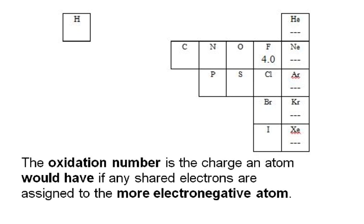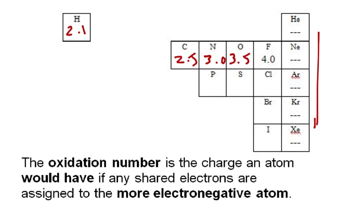Since this depends on electronegativity numbers, let's quickly review. The noble gases are undefined, and fluorine is the most electronegative at 4.0. These others we can do from memory — they go down by about 0.5: oxygen is 3.5, nitrogen about 3.0, carbon about 2.5. Different sources give slightly different numbers, but that's okay. Hydrogen is about 2.1, which is important because the very low electronegativity numbers of metals are around 1 or a little less, so hydrogen is kind of middle-of-the-road.